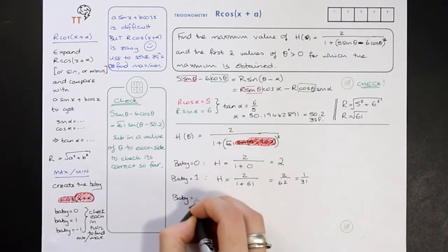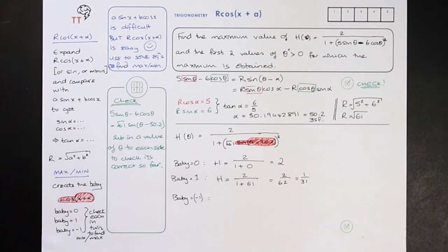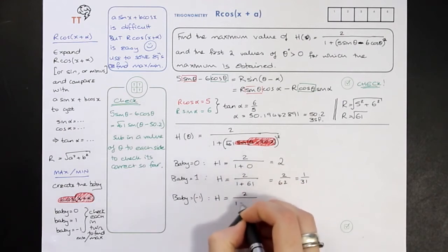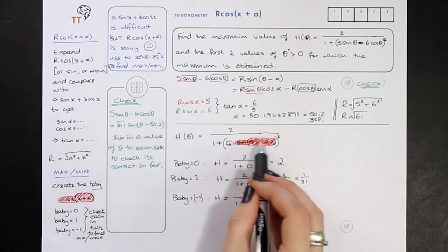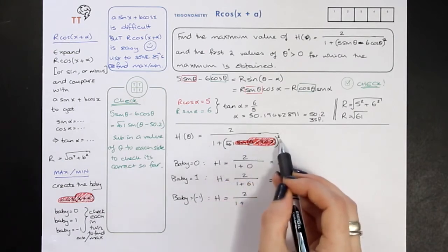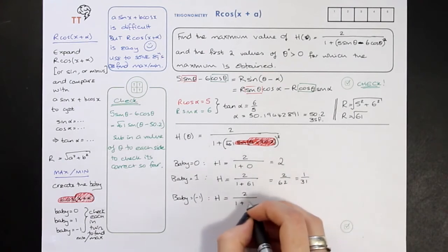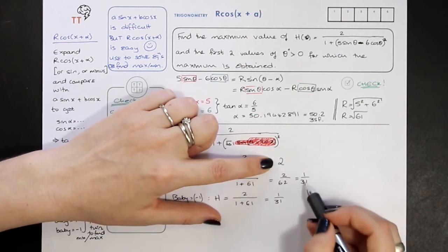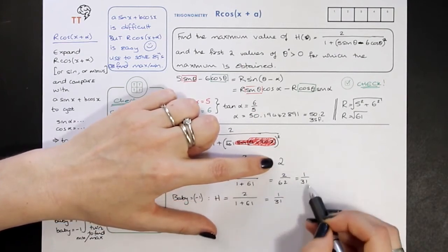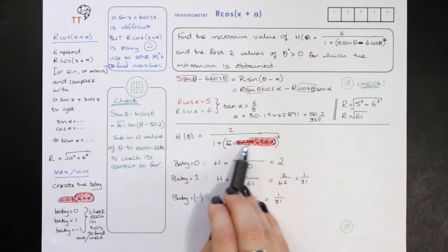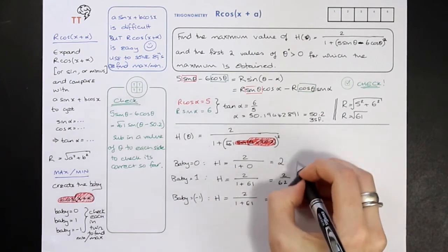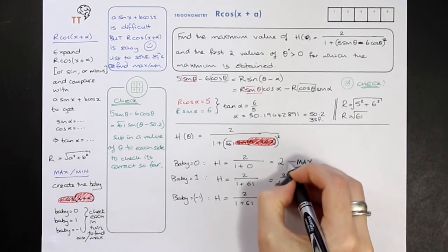If the baby is −1: h = 2/(1 + (√61 × −1)²). Since we square it, the minus cancels and we again get 2/(1+61) = 1/31. So testing all three: baby = 0 gives 2, baby = ±1 gives 1/31. Clearly 2 is the biggest, so the maximum is 2, and both baby = 1 and baby = −1 give the same minimum of 1/31. The question asked for the max, and I've just found it: the maximum is 2.